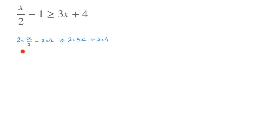Looking at the first term, x is being divided by 2 and also being multiplied by 2 — those two operations cancel each other out to leave us with x. So this inequality becomes x minus 2, greater than or equal to 6x plus 8. We now solve this inequality the usual way.